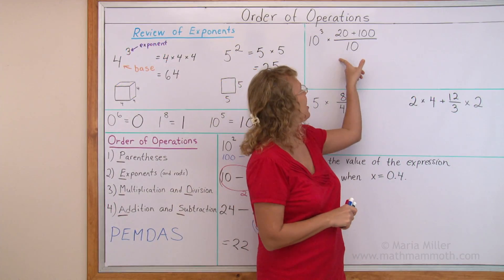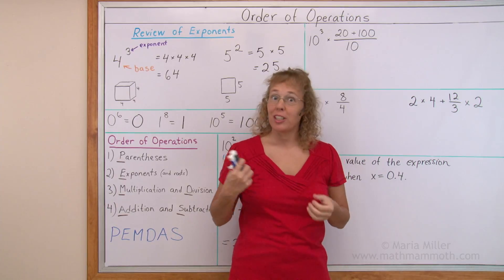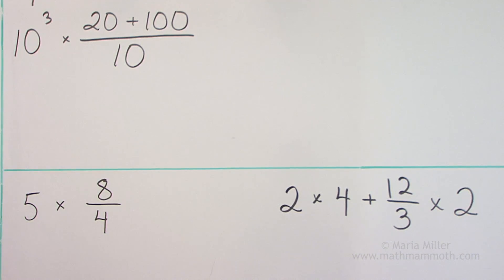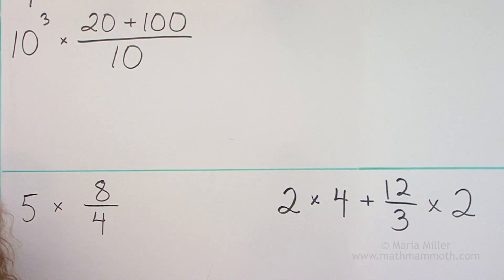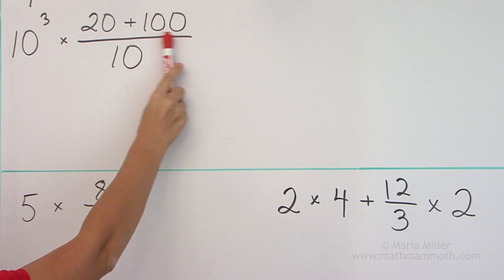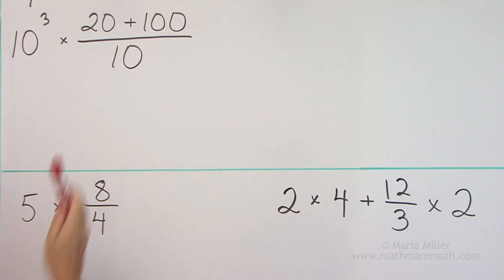The next exercise is over here. Which operation will we do first? In this case we do addition first. Are you surprised? It just so happens that when division is written with this line here, the fraction line, then it implies parentheses there.